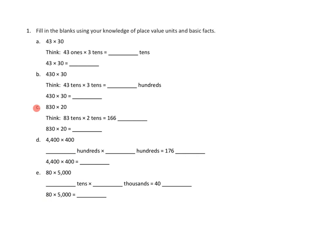Let's take a look at problem number one. Problem number one asks us to fill in the blanks using your knowledge of place value units and basic facts. I'm going to do 1c. I'm going to look at 830 times 20. And they sort of started me out here. They said, let's think of this as 83 tens.